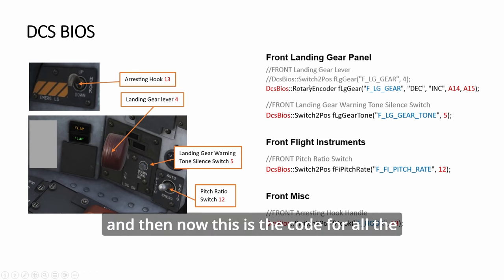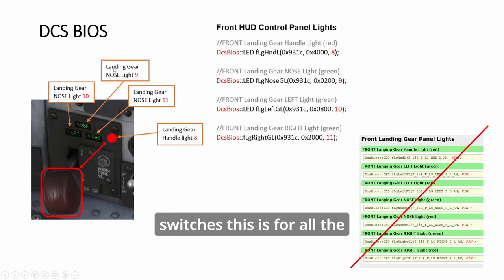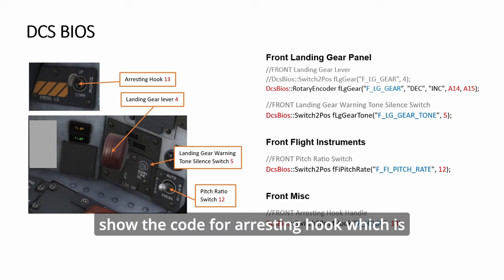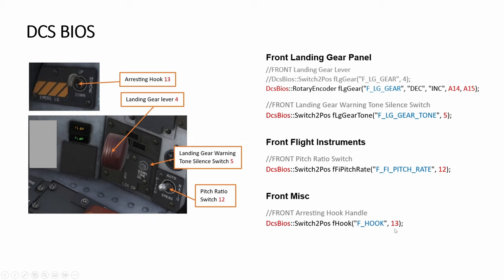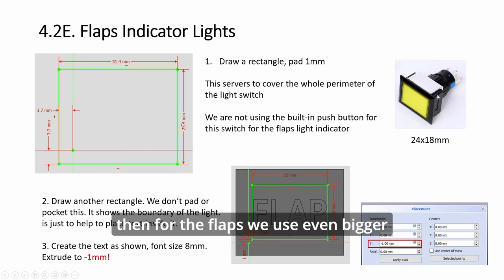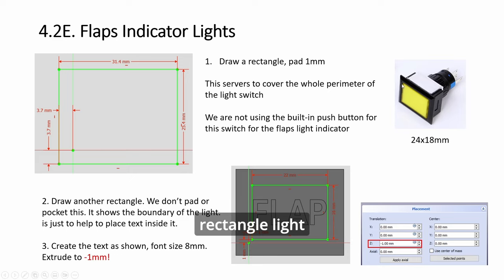Now this is the code for all the switches. This is for all the lights, and these are all the switches. In the previous video I forgot to show the code for the arresting hook, which is here. It's very simple, just one pin. So four switches here.